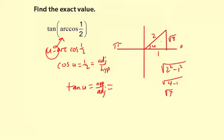So opposite of angle u is square root of 3. Adjacent side is 1. So simply square root of 3 is the tangent of the arc cosine of one half.